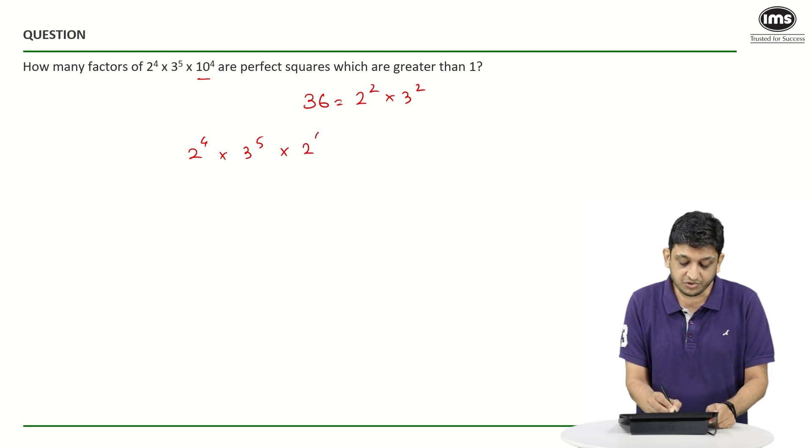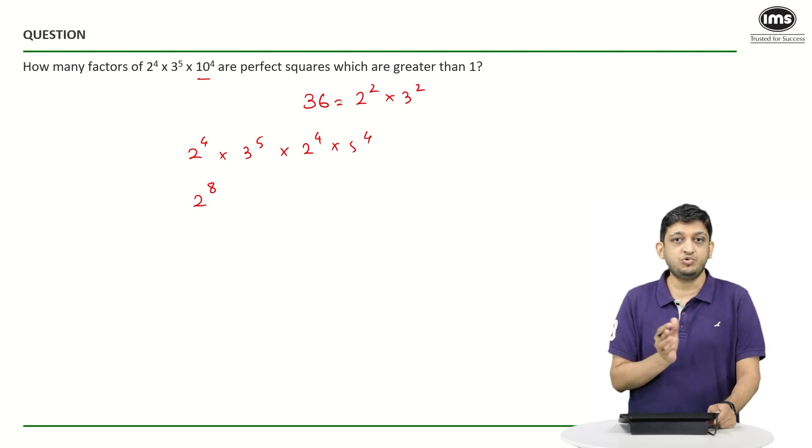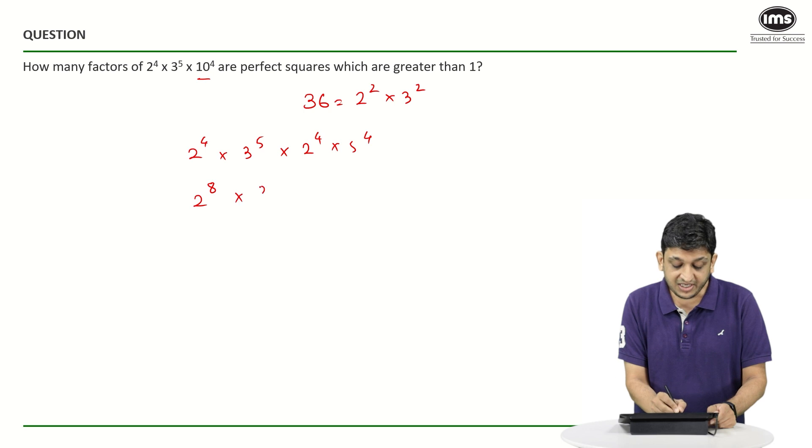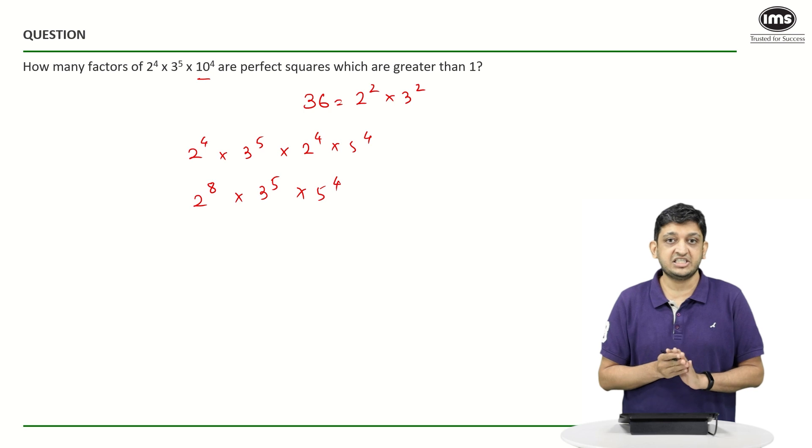So we are going to get 2⁴ × 5⁴. Now if you look at the factors that we have here, we can combine the powers of 2 to get 2⁸ multiplied by 3⁵ multiplied by 5⁴. So that is basically the expression in such a manner that all the bases are distinct prime factors.